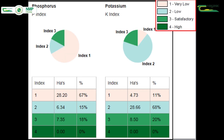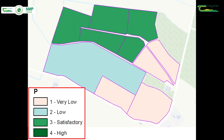The NMP online fertilizer plan will show you the P (phosphorus) and K (potassium) levels on your farm based on the soil sample results. For P and K, there is an index system which shows the levels of P and K in the soil and ranges from 1 (very low) to 4 (high).